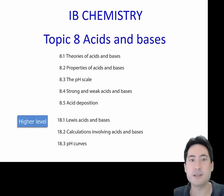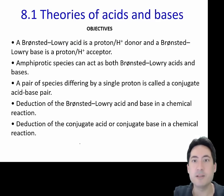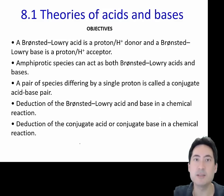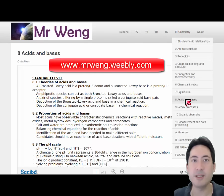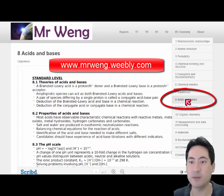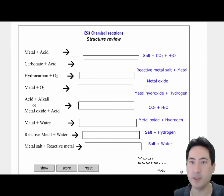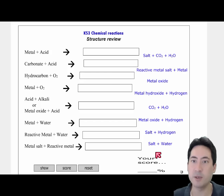Welcome to the topic: Acids and Bases. This is the first lesson, 8.1 Theories of Acids and Bases, which will mainly go over Bronsted-Lowry Acids and Bases. As you saw in the video clip, you may need to know some acid and base equations previous to this — it'll be assumed knowledge. You can find these on the website www.mrwang.weebly.com, where I've made up a quiz where you can grab the various products and put them into the right equation.